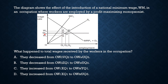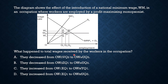When the government introduces the national minimum wage Wm, the total wage cost will increase. The new total wage area becomes O-Wm-U-Q3, representing the higher wage rate Wm multiplied by the new quantity of labor employed. The question is what happens to the total wages received by workers in this occupation under the minimum wage.